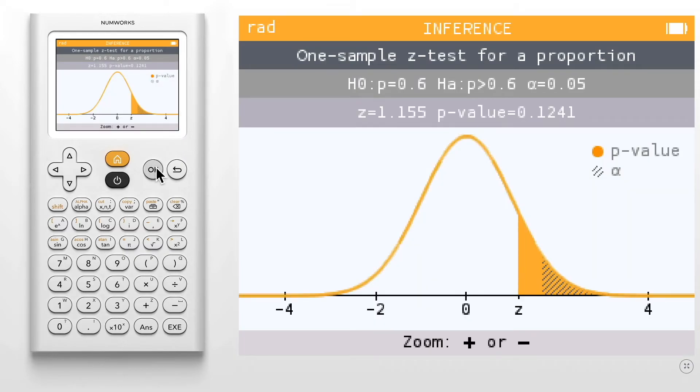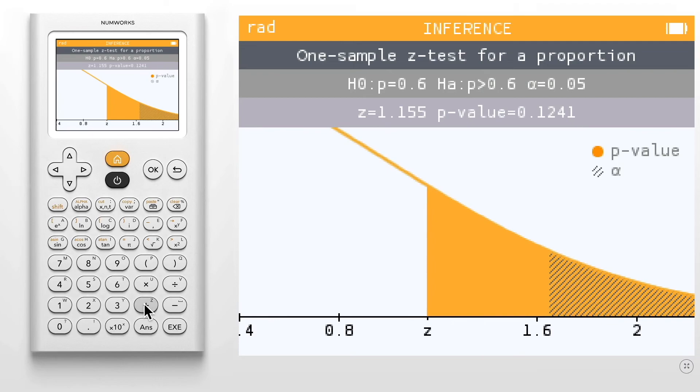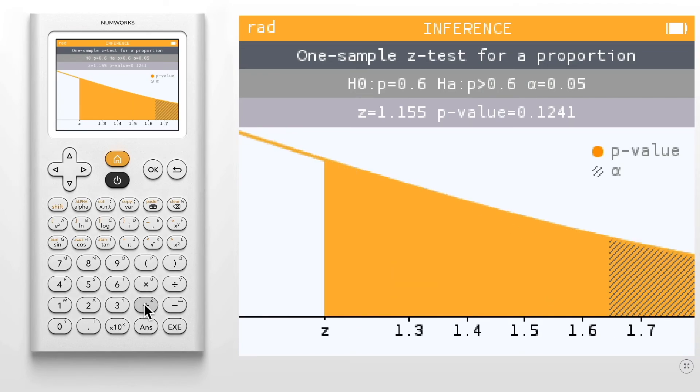The final screen of our test provides a visual of our test statistic on the standard normal curve. You can use the plus key to zoom in to visually compare the p-value and alpha.